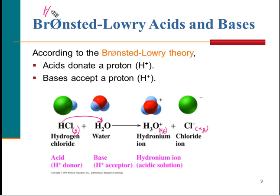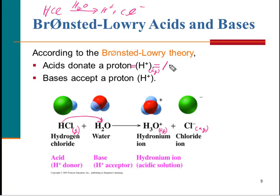Arrhenius would just say you dissolve HCl in water and get the hydrogen ion and chloride ion. That's not a whole lot different, except we now have the hydronium ion. A proton is the same thing as a hydrogen ion, and the hydrogen ion in aqueous solution is really the same thing as the hydronium ion. So proton, hydrogen ion, and hydronium ion are all functionally the same thing. Bronsted-Lowry makes use of this hydronium ion; Arrhenius does not.